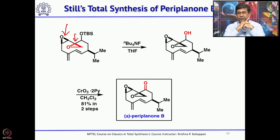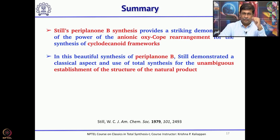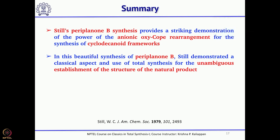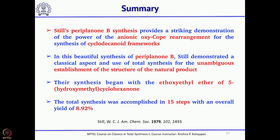Before making Periplanone B, Still had made two wrong isomers — in one both epoxide stereocenters were opposite, and in the second one was correct and the other was not. Overall, this first total synthesis by Clark-Still used anionic oxy-Cope rearrangement followed by Rubatom oxidation as key reactions to introduce the alpha-hydroxy ketone. The synthesis took about 15 steps with a combined yield of approximately 9%, which is remarkable considering the dense functionality present in the natural product.